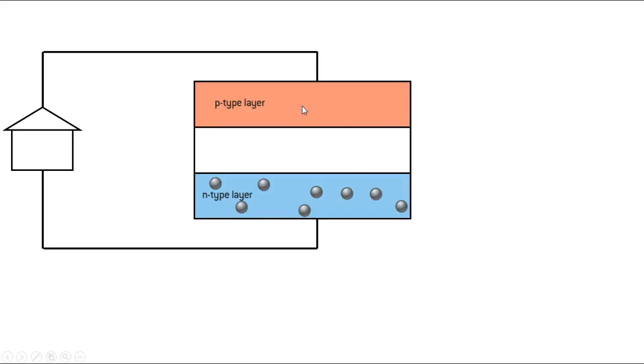Here is a photovoltaic cell connected by a circuit to your house. And there are three basic layers that go into a photovoltaic cell. There's the n-type layer on bottom, a gap layer, and the p-type layer.